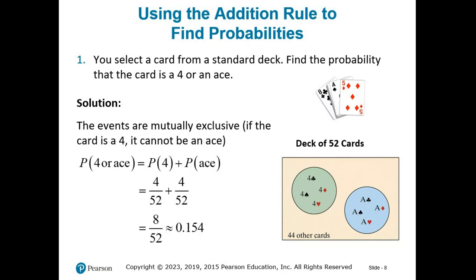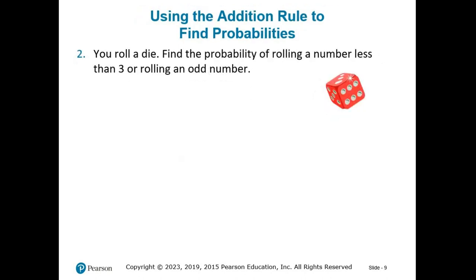You roll a die. Find the probability of rolling a number less than 3 or rolling an odd number. We have event A: rolling less than 3, and event B: rolling an odd number. Is there overlap? Rolling less than 3 gives outcomes 1 or 2. Rolling an odd number gives 1, 3, or 5. They share the outcome 1, so these events are not mutually exclusive.